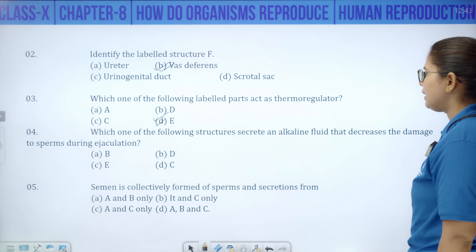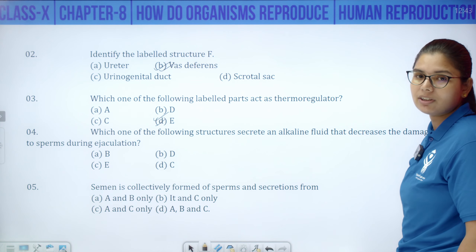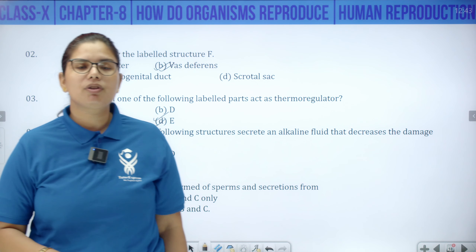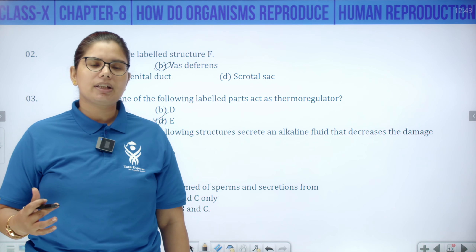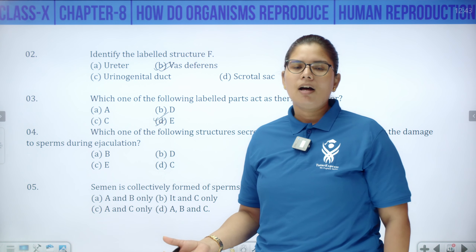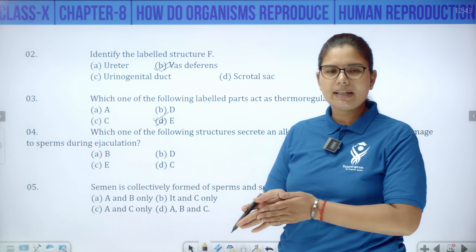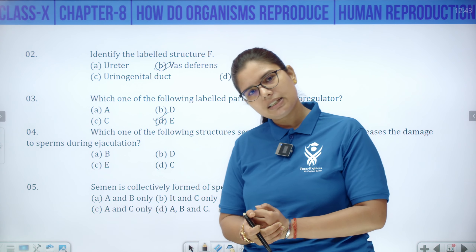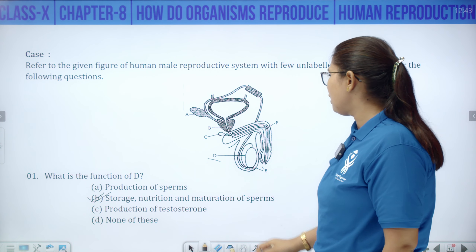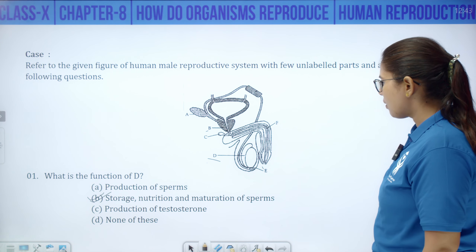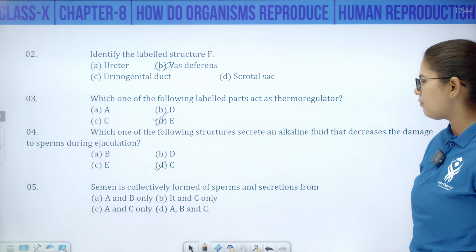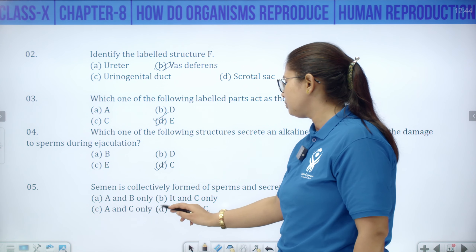Which structure secretes an alkaline fluid that decreases damage to sperm during ejaculation? The prostate gland — it neutralizes the acidic environment of the vagina by producing alkaline secretion, protecting sperm from damage. Semen is collectively formed of sperm and secretions from A, B, and C — all three accessory glands — so the answer is all three.